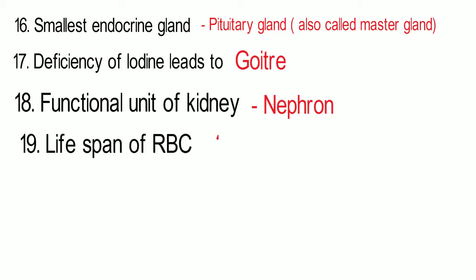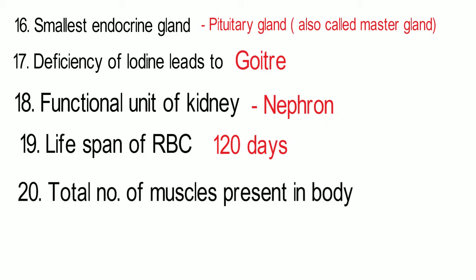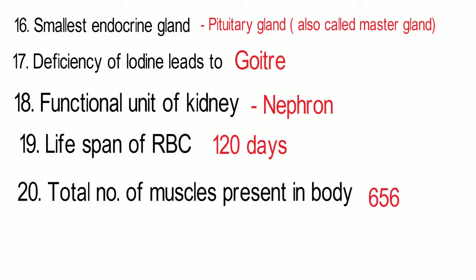The lifespan of RBCs is about 120 days, after which they go into the spleen. The total number of muscles present in the human body is 656.